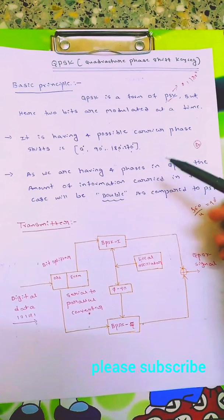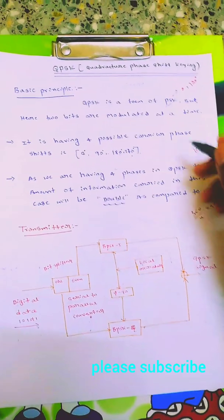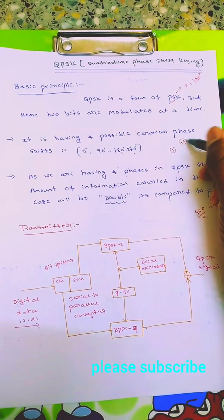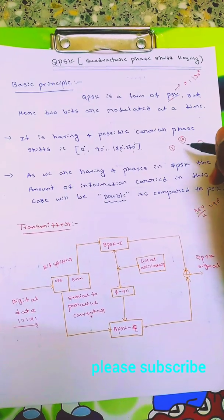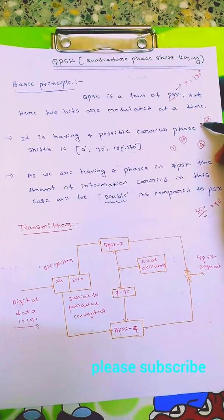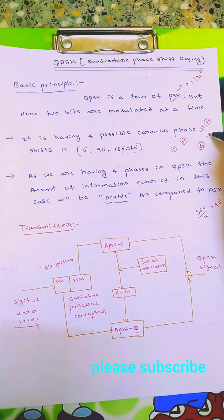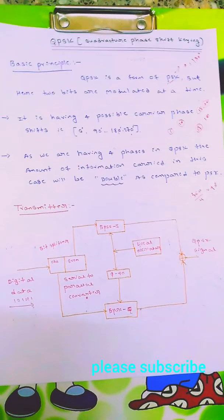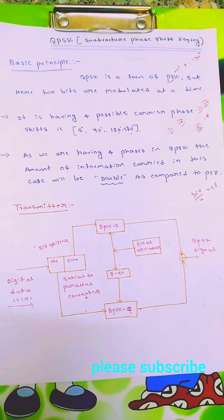The main thing is in case of PSK we consider one bit at a time, but in case of QPSK we consider two bits at a time: 00, 01, 10, 11. Like that, you use two bits for generating the phases.